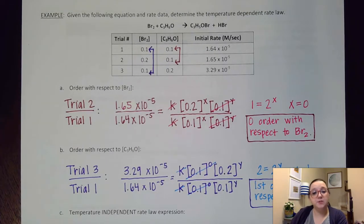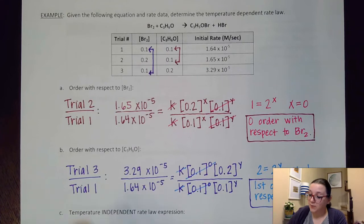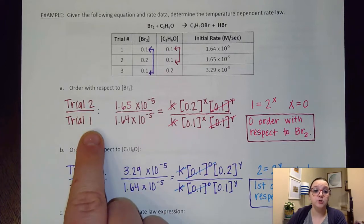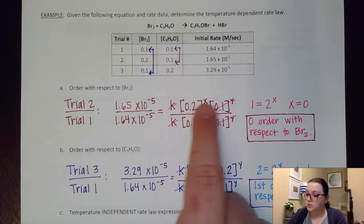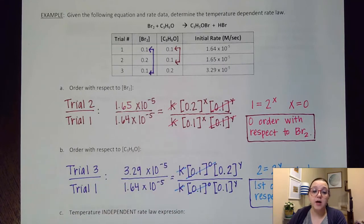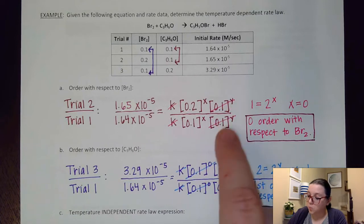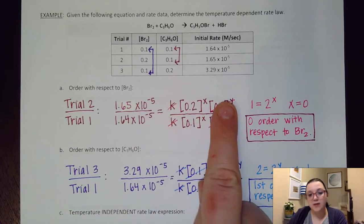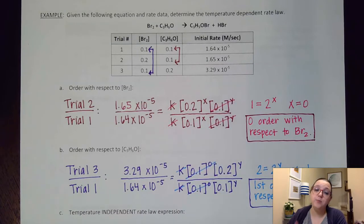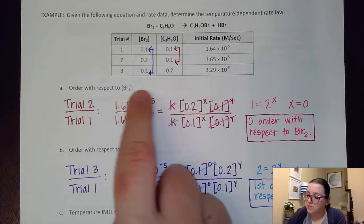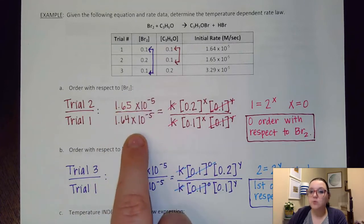So to solve the order with respect to Br2, I went ahead and selected Trial 2 and Trial 1. I put Trial 2's information on top of Trial 1's because Trial 2 had some bigger numbers involved with it. And so then when I set that up, what happened is that k ended up canceling. The 0.1 raised to the y ended up canceling out. And as a reminder, that means you would not have had to show those in your setup. I usually do because I like to see those canceling out.